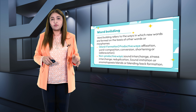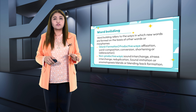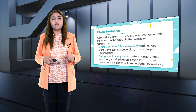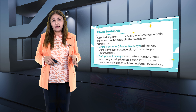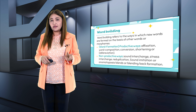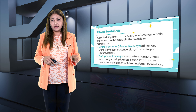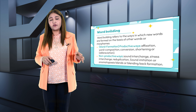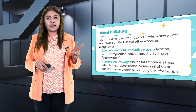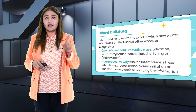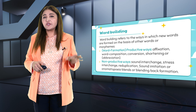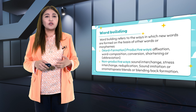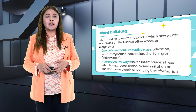Word building refers to the ways in which new words are formed on the basis of other words or morphemes. Word formation is divided into two ways. The first is productive ways: affixation, compounding, conversion, shortening or abbreviation. The second is non-productive ways: sound interchange, reduplication, sound imitation or onomatopoeia, blends or blending, back formation, and borrowings.